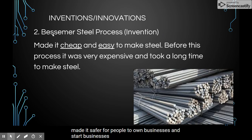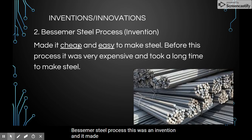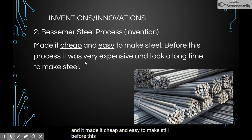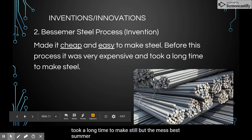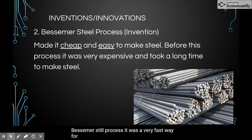Next is called the Bessemer steel process. This was an invention that made it cheap and easy to make steel. Before this process, it was very expensive and took a long time to make steel. But the Bessemer steel process was a very fast way for steel to be made, and it also made it cheap.